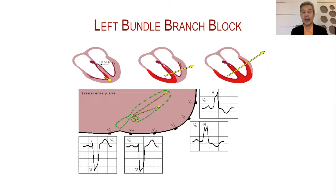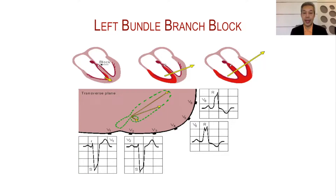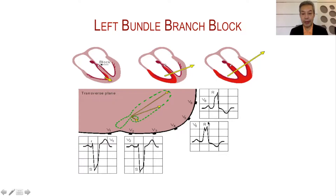For example, if there's a delay in the left bundle branch, as you will see in this figure, the conduction will go to the right ventricle and then to the left ventricle — meaning the RV and LV are no longer simultaneous. The RV fires before the LV, and instead of being simultaneous depolarization, they become asynchronous. The QRS of the right will be recorded first and the QRS of the left will be recorded later, such that in V5 and V6 — the left leads — there will be notching of the QRS.